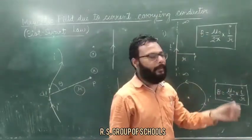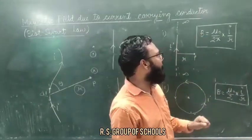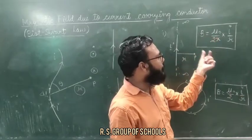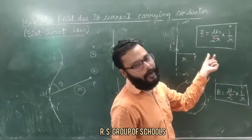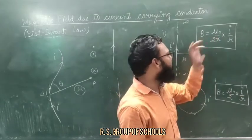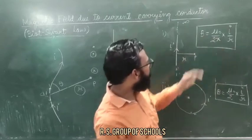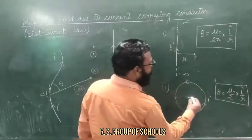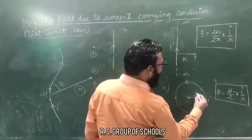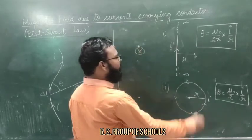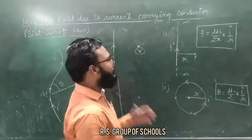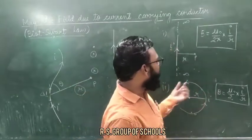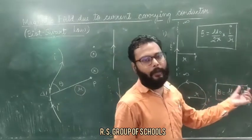Here mu naught is the permeability of free space and mu naught is equal to 4 pi into 10 raised to the power minus 7 N per ampere squared. This case is for a circular coil of radius R. The magnetic field at the center is mu naught upon 2 multiplied by I upon R.